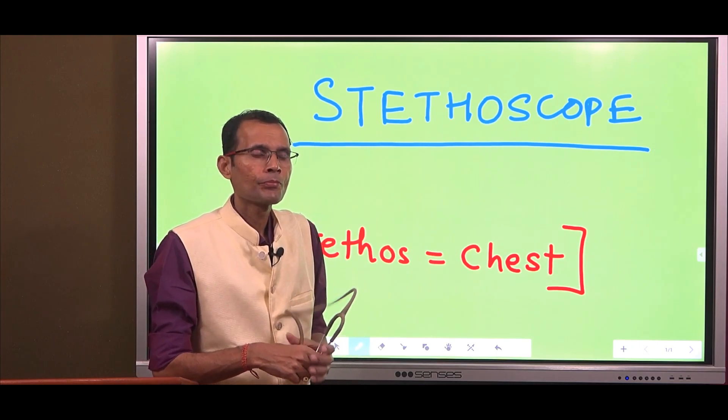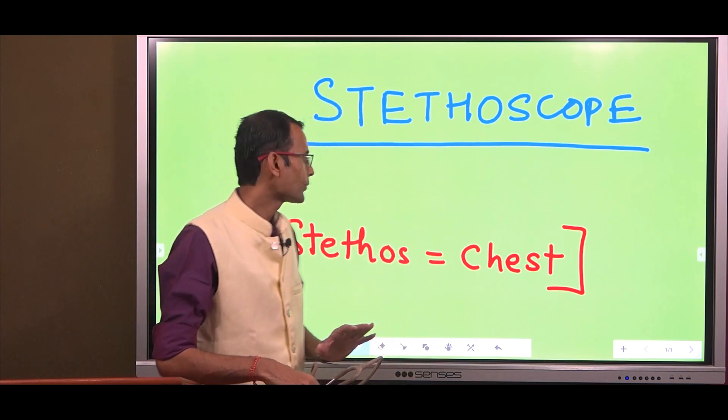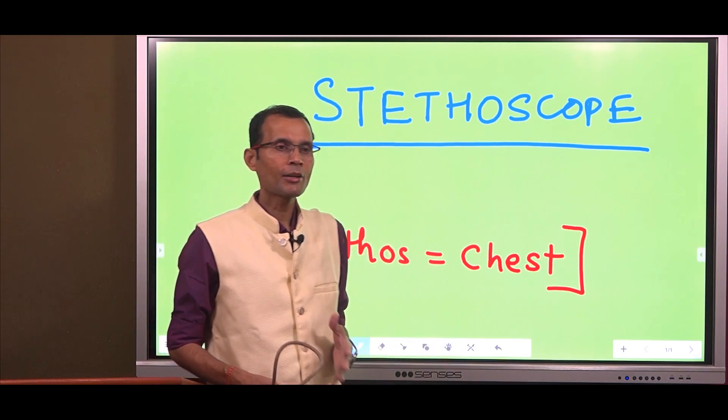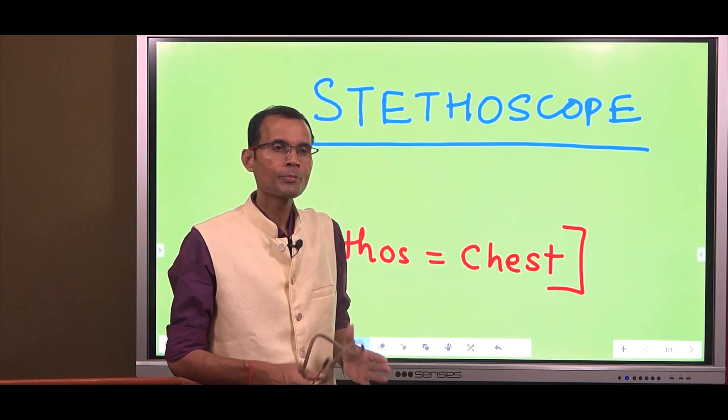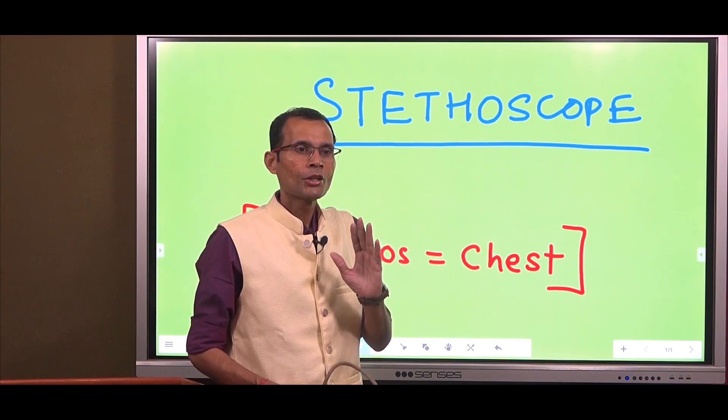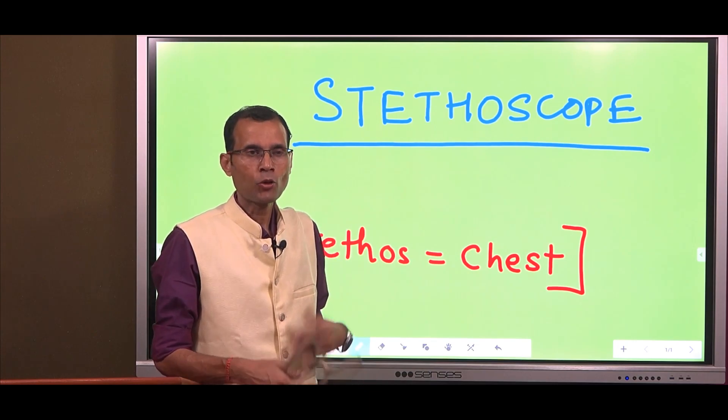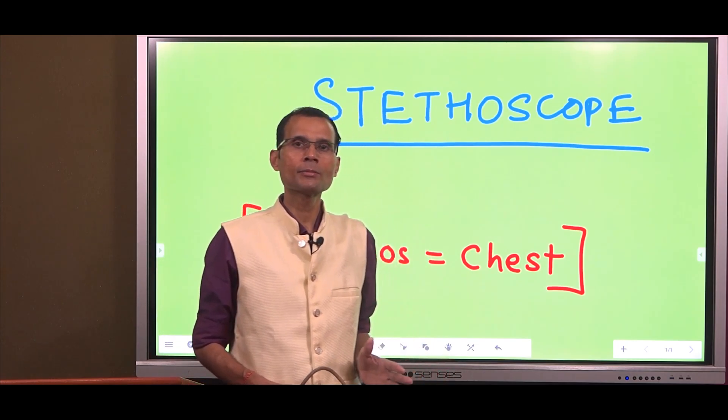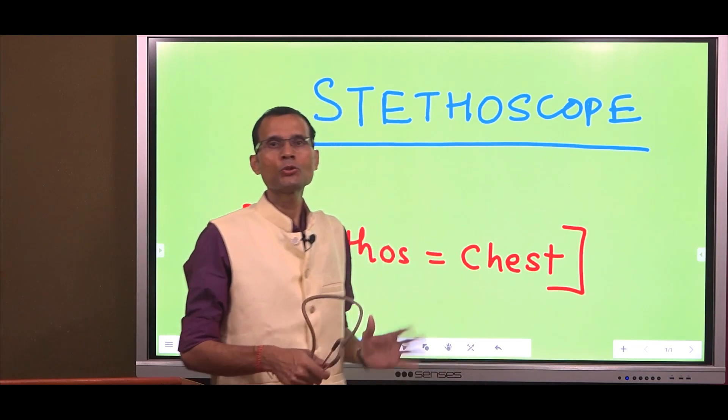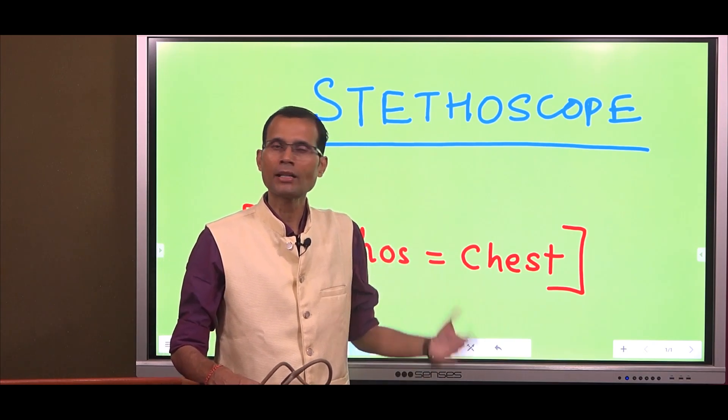First things first, how was the stethoscope invented? Now first of all, stethos means chest, literal meaning, and therefore stethoscope is used most commonly to hear the chest sounds. Obviously there are two organ systems in the chest - the heart and the lungs. So primarily this is used to listen to the heart sounds and the sounds originating from the lungs.